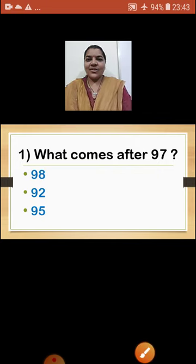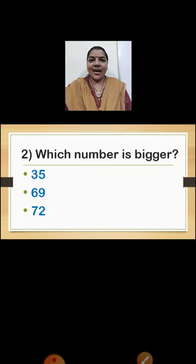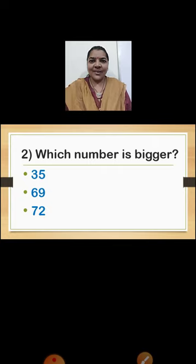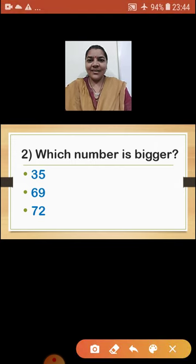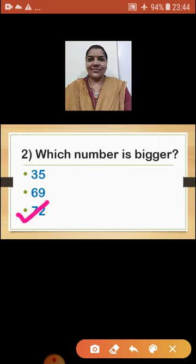Let's see the next question. Number 2: Which number is bigger? Here are given options. You have to compare the numbers and identify the bigger number. The given numbers are 35, 69, and 72. I hope you all can read numbers properly. Which is the correct answer? Number 72 is the bigger number.